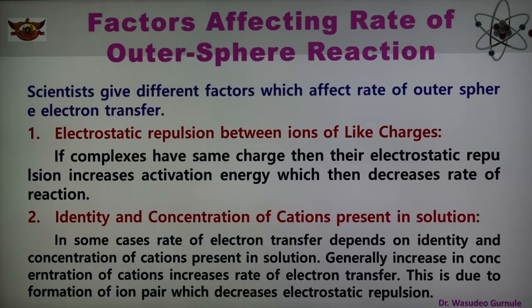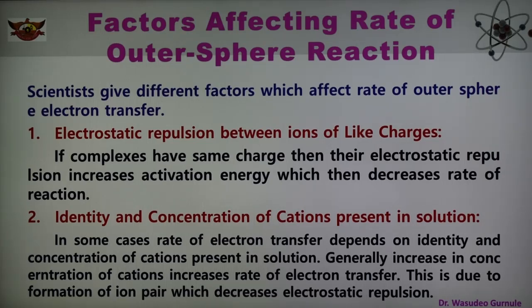There are five factors which are affecting the rate of outer sphere reaction. The first factor is electrostatic repulsion between ions with like charges. If the complex has the same charge, then it decreases the rate of outer sphere reaction. The electrostatic repulsion increases the activation energy, which then decreases the rate of reaction. So we can say that the rate of outer sphere reaction decreases with the increase of activation energy due to electrostatic repulsion between the ions.